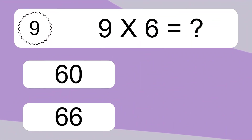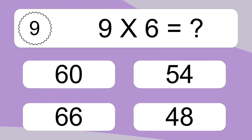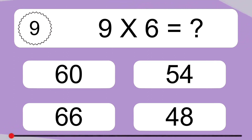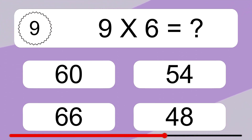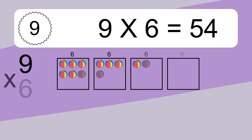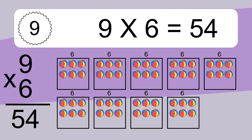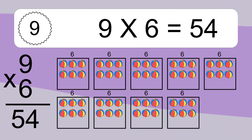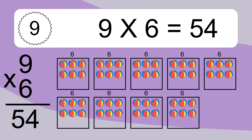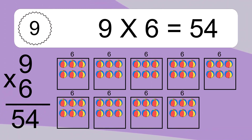9 times 6 equals what? 9 times 6 equals 54. We have 9 boxes, and each box has 6 colorful balls inside. If you count all the balls in all the boxes together, you will have 9 times 6 balls. This equals 54 balls.